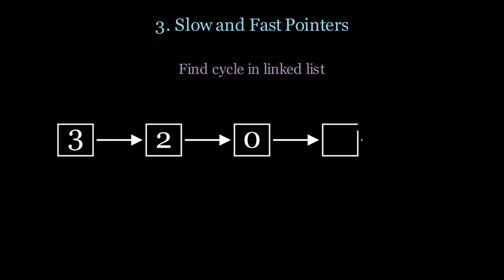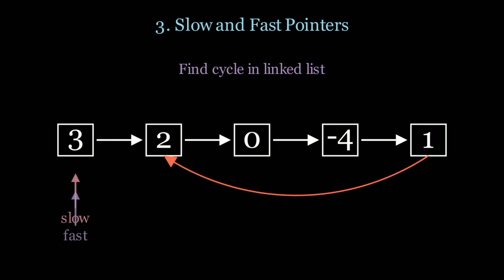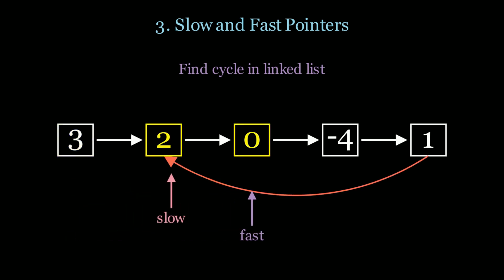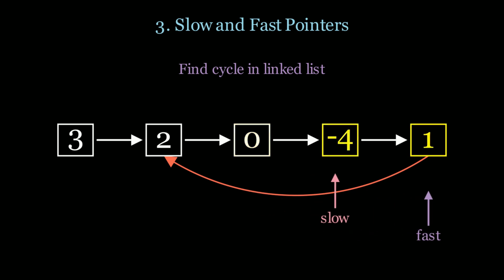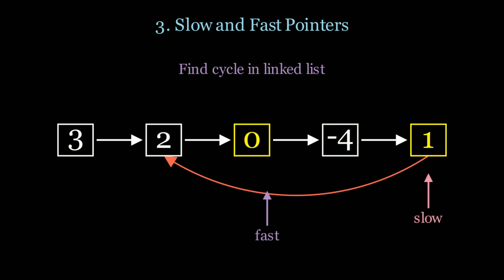We initialize two pointers: a slow and a fast. Slow moves once, fast moves twice. Slow moves once, fast moves twice. Eventually if there's a cycle, slow will intersect with fast. Now we have O(n) time complexity with constant space.